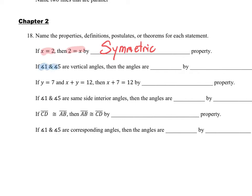If angle 1 and angle 5 are vertical angles, it follows that vertical angles are congruent — and that is by the vertical angle theorem.